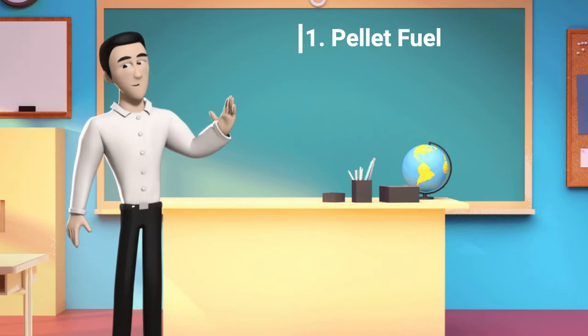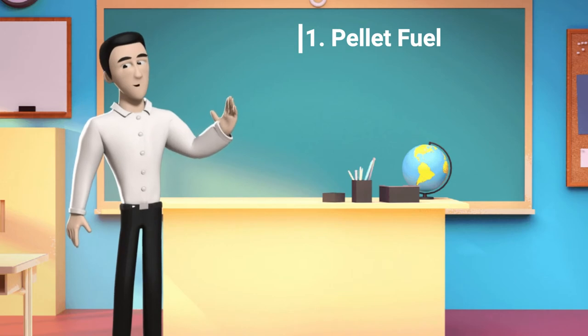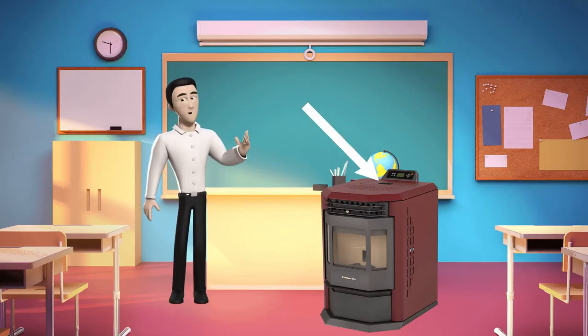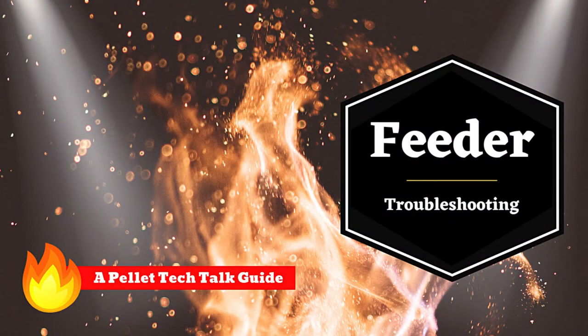First, pellet fuel. The stove needs enough pellets to start a decent fire. If it looks like the stove is not feeding pellets, first check to make sure the hopper is full and the lid is closed. You can also refer to our feeder troubleshooting video for more in-depth troubleshooting.